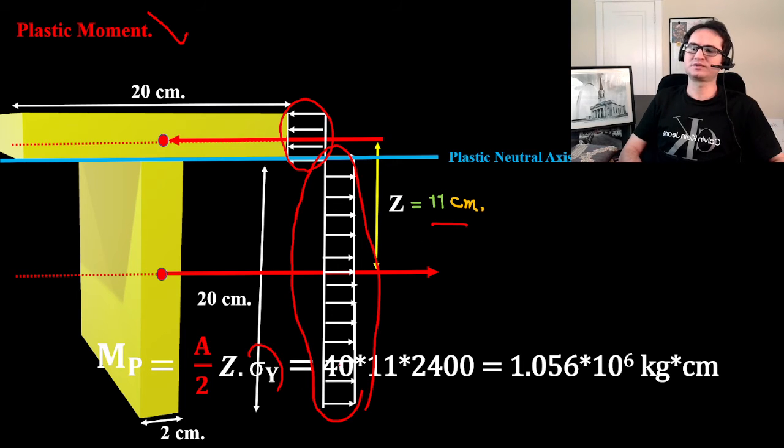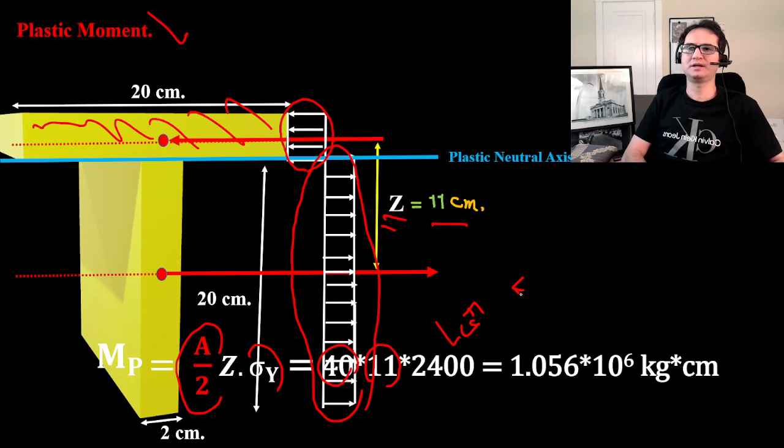So area is 40, A/2 - that's each of the section is 40 cm² - times 11, which is the distance, and times 2400, which is Fy in kg/cm².